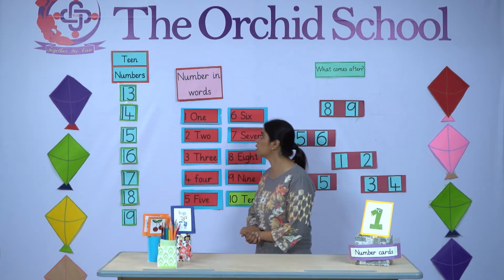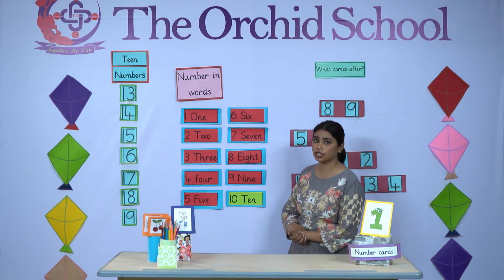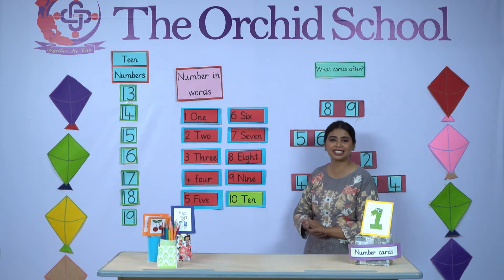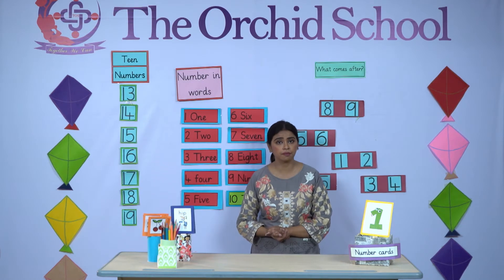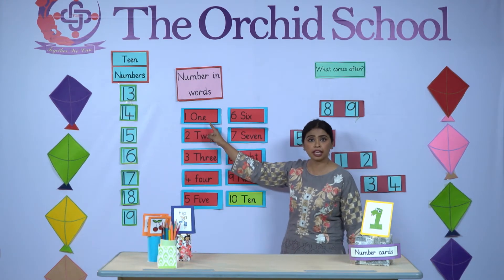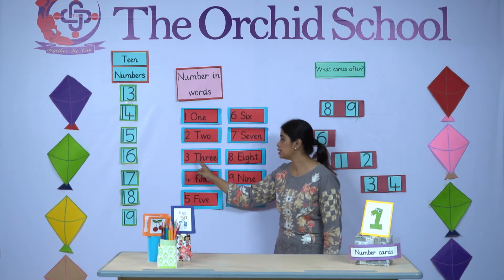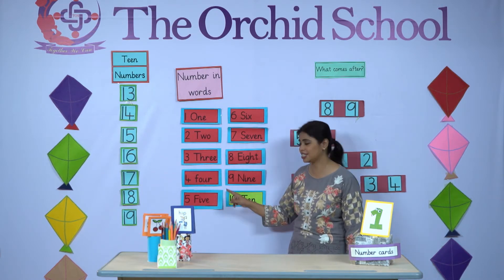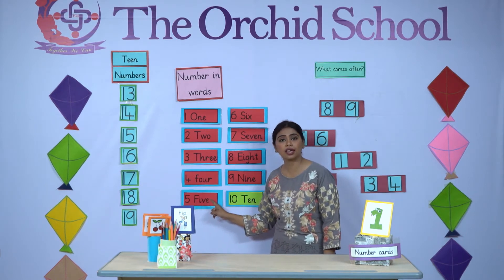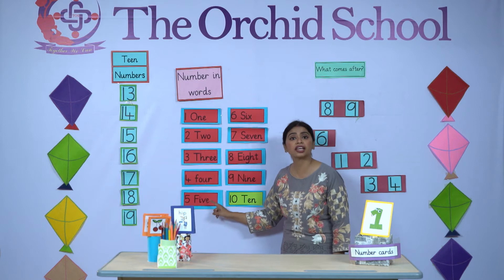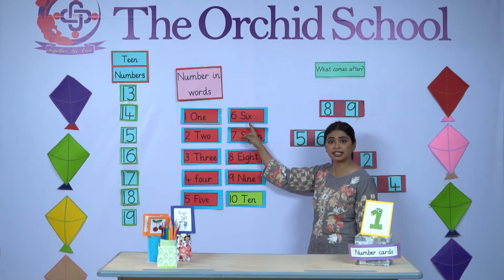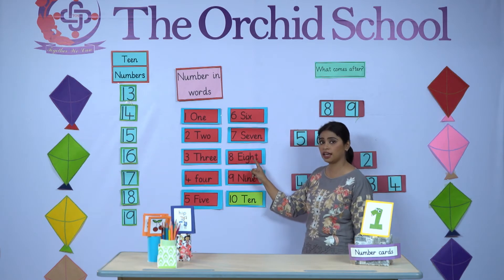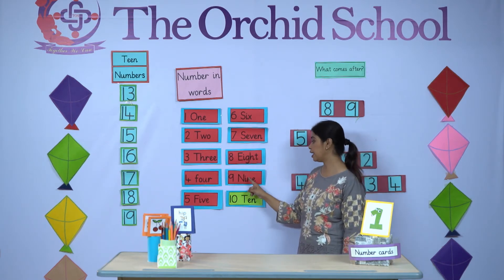Okay, so let's move on to numbers. Today we are going to learn one new number — that is number 10. So are you ready to learn from 1 till 10? O-N-E: 1. T-W-O: 2. T-H-R-E-E: 3. F-O-U-R: 4. Fantastic. F-I-V-E: 5. S-I-X: 6. S-E-V-E-N: 7. E-I-G-H-T: 8. N-I-N-E: 9.